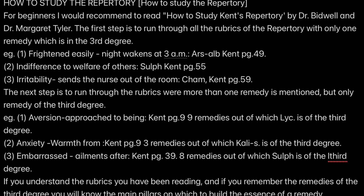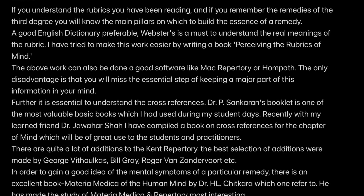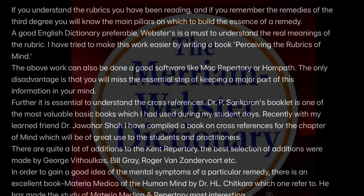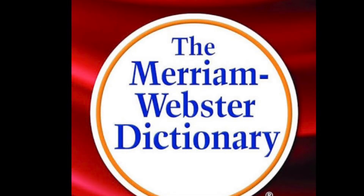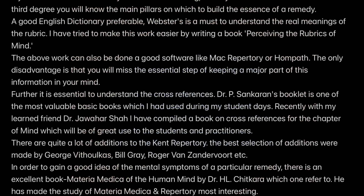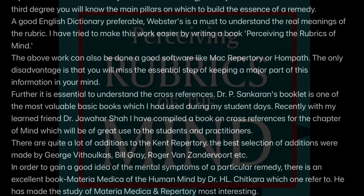If you understand the rubrics you have been reading, and if you remember the remedies of the third degree, you will know the main pillars on which to build the essence of a remedy. A good English dictionary — preferably Webster's — is a must to understand the real meaning of the rubric. I have tried to make this work easier by writing a book, 'Perceiving the Rubrics of the Mind.'